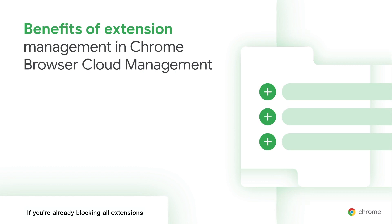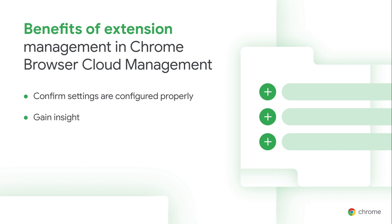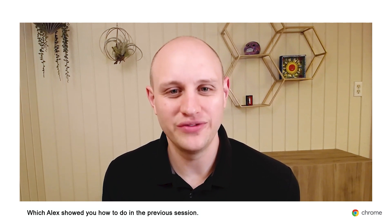If you're already blocking all extensions except for the ones that you allow, you can use Chrome browser cloud management to confirm your existing settings are properly configured, and gain some insights on what permissions the extensions that you allow actually have. If you're not managing extensions at all, or just blocking a select few and allowing the rest, Chrome browser cloud management will provide great insights into what extensions are installed and what the impact would be to your end users if you did start blocking a certain permission or extension. The first step is to enroll your browsers into Chrome browser cloud management. Once your browsers are enrolled, give it a bit of time for the solution to gather information on the extensions that are installed to populate the apps and extension usage report.